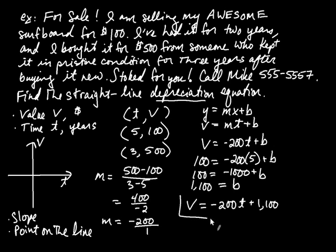And this would be my answer. Now, there are a couple of interesting things about this problem. The first thing is that the Y-intercept is, in this case it's 1,100. And what does that mean? That means when the time was zero, the board was worth $1,100. So somebody bought it for $1,100, and the board has been dropping in value. According to this graph, it looks like there's going to be some time when the board has no value.